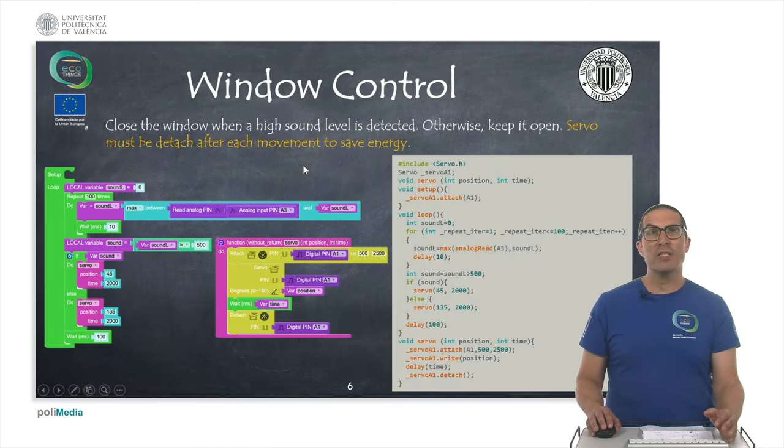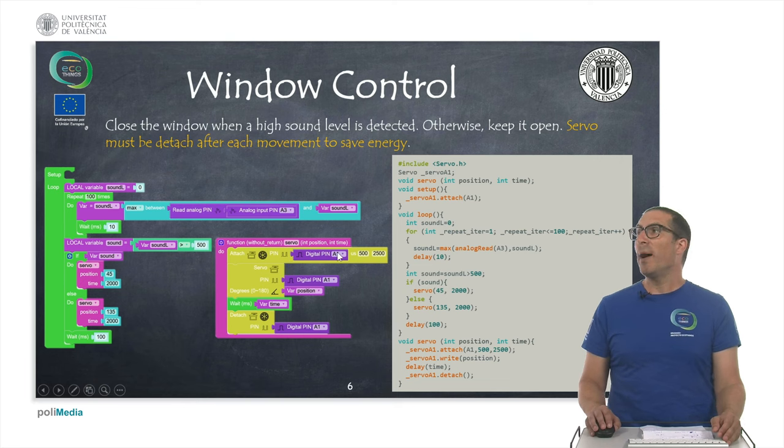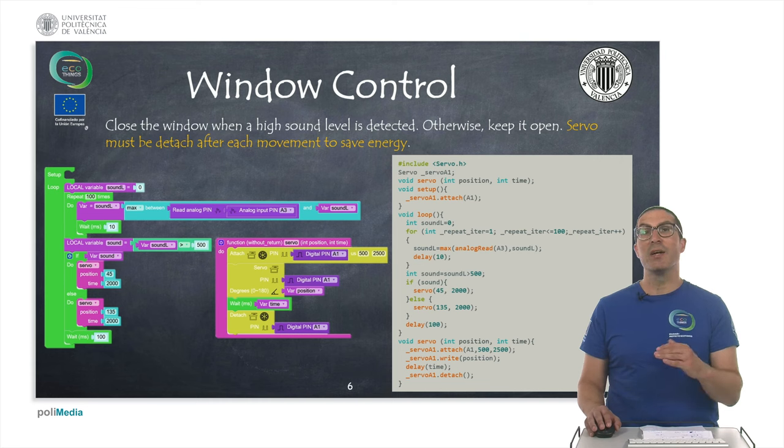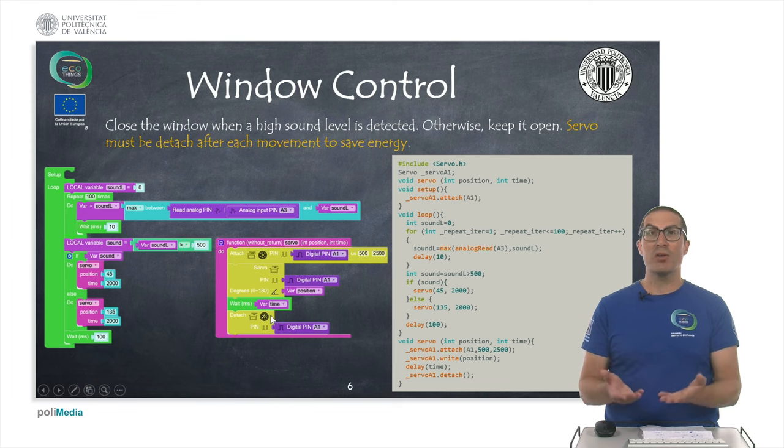On this second exercise, the idea now is to control the window so we can open it and close it. And for that we're going to use a servo which is connected to pin A1. But servos, in order to save some energy, the idea here is that we will attach, that means connect the servo, so that's when it starts consuming energy. We will attach it every time we want to move it, we will move it to a given position, and after some time we will detach the servo so it's disconnected and it stops consuming energy.